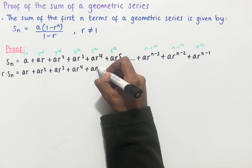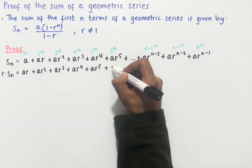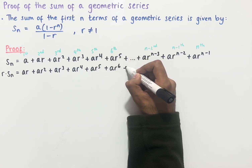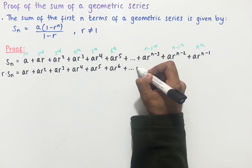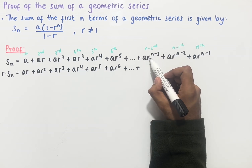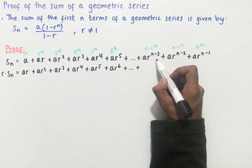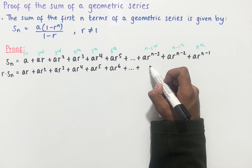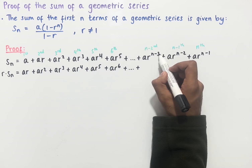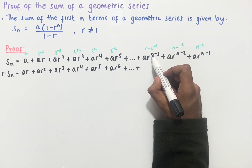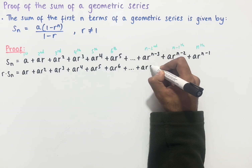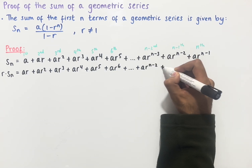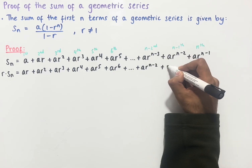Continuing, we have plus ar to the power of 5, plus ar to the power of 6, and now we'll add on the ellipsis. Then we have ar to the power of n minus 3; if we multiply this by r we need to add 1 to the power, so n minus 3 plus 1 gives us n minus 2, and so we get ar to the power of n minus 2.